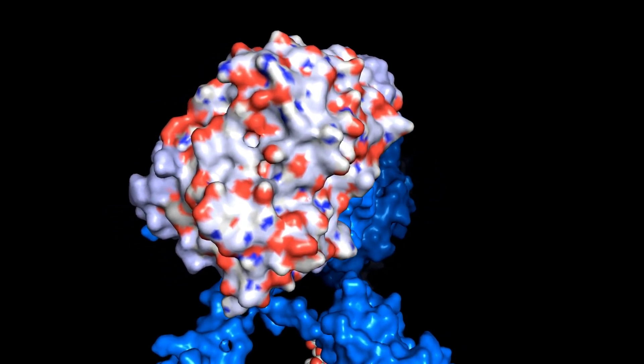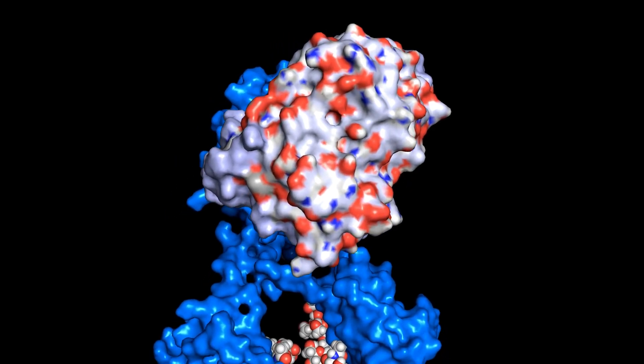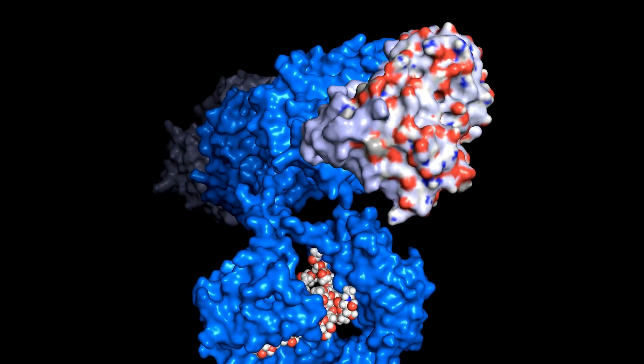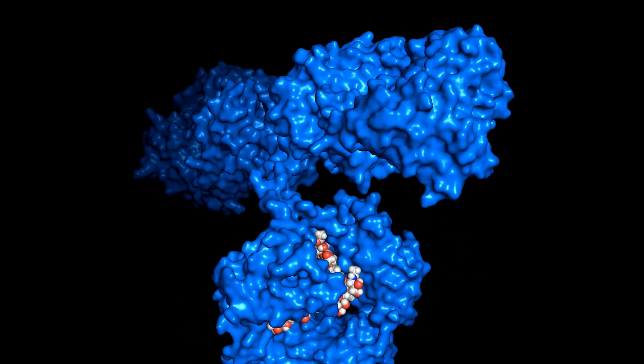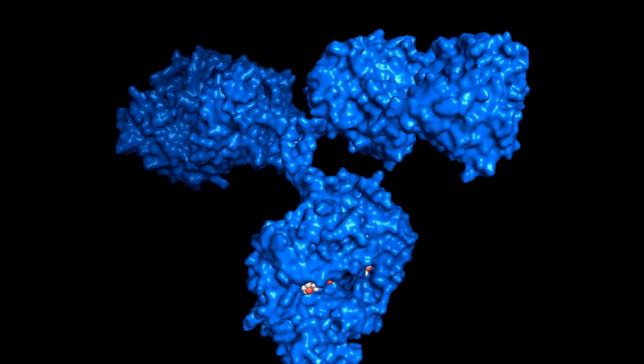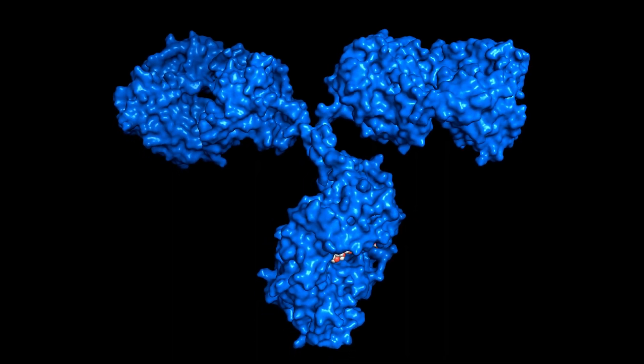The first antibodies the B cell produces are attached to the cell's surface. And if that B cell happens to bind an antigen, it can be stimulated to produce more antibodies, some of which can float freely in our bloodstream and lymphatic systems. With that in mind, let's take a deep dive into antibody structure.